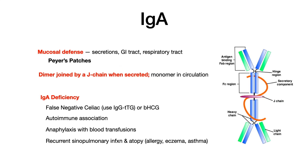IgA is very high yield for USMLE and COMLEX. IgA is involved in mucosal defense. If you're answering a test question dealing with secretions — GI tract from Peyer's patches, respiratory tract, anything wet or mucosal — that equals IgA. For exams, know that IgA is a dimer joined by a J chain. When IgA is in circulation it's actually a monomer, but when secreted it becomes a dimer with the J chain.